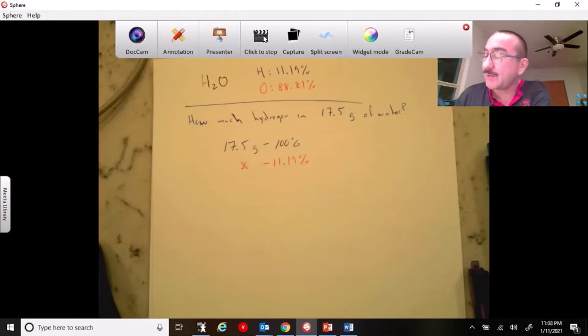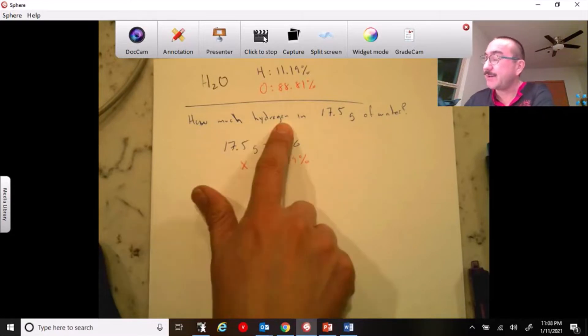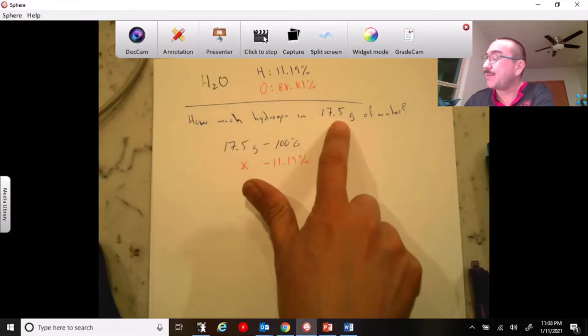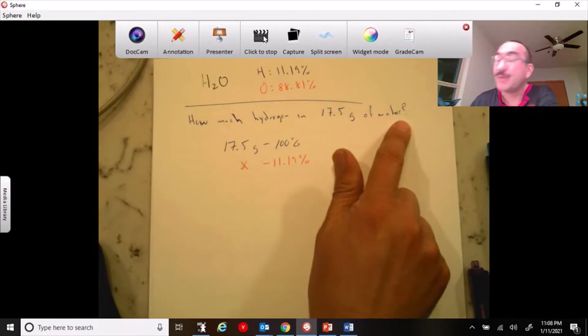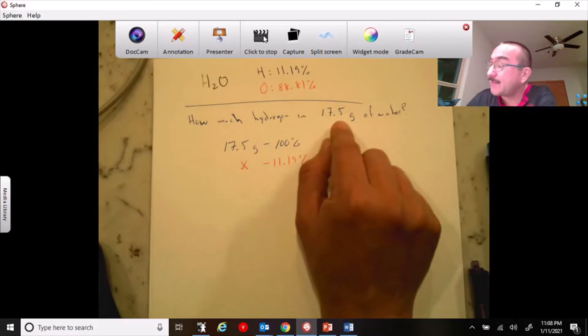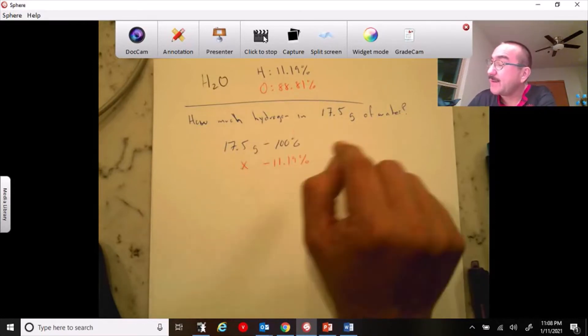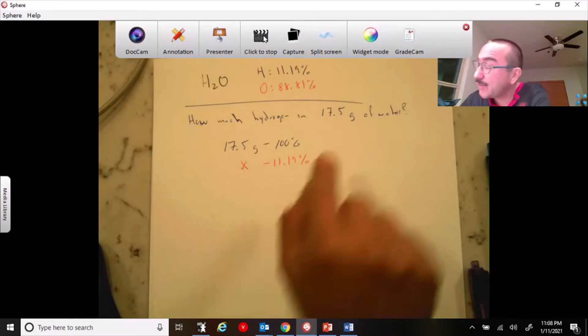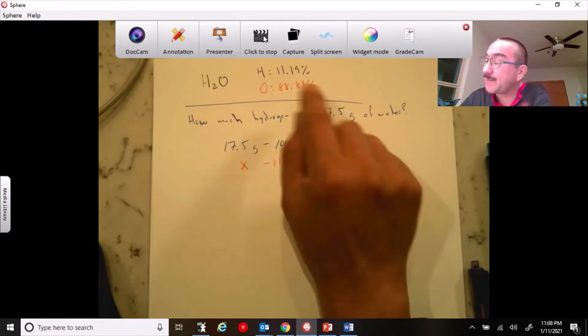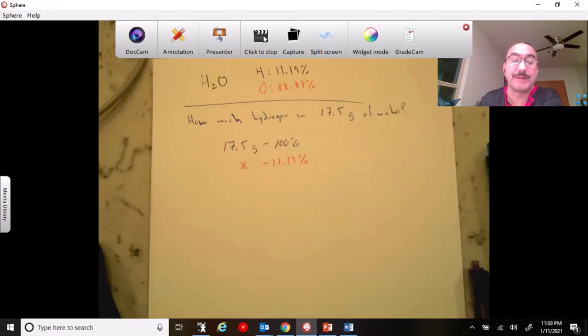So imagine they ask you a question like this: how much hydrogen is in 17.5 grams of water? Notice they're asking you about the amount of hydrogen in a certain amount of water. Well, we know water is 11.19 percent hydrogen, right? So we can set up a proportion like this.